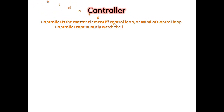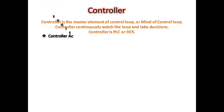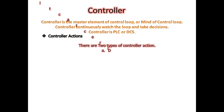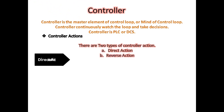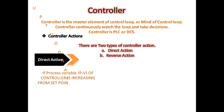The controller is the master element of the control loop — the mind of the system. The controller continuously watches the loop and takes decisions. The controller is a PLC or DCS. There are two types of controller actions: direct action and reverse action.